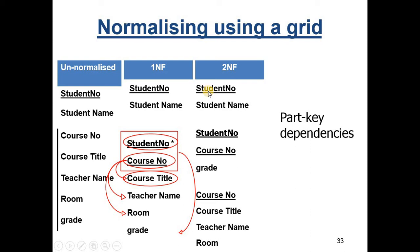Regarding foreign keys: student number here is the primary key and is repeated in the grades table, making it a foreign key there. Course number is the primary key in the course table and is repeated in the grades table, making it a foreign key there too — it is the primary key in one structure and a foreign key in the other.